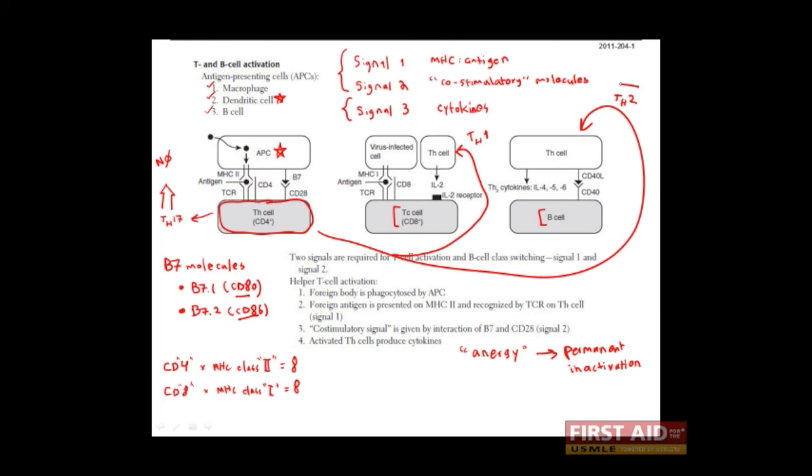The Th2 response is well adapted to respond to extracellular parasites like helminthic worms, which are too large to be digested. In this case, you want to activate the B cell response and start producing antibodies, which can be secreted and directed at the parasite. In this case, the most important cytokines are interleukin-4 and interleukin-5.